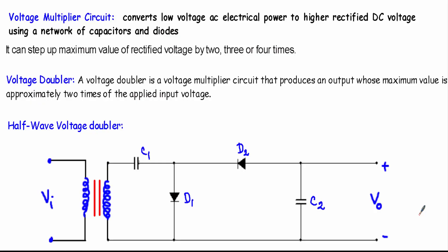In this video I will talk about voltage multiplier circuits, voltage doubler circuits, and the detail analysis of half-wave and full-wave voltage doubler circuits. Voltage multiplier circuits are electrical circuits that convert low voltage AC electrical power to higher rectified DC voltage using a network of capacitors and diodes. From the main supply line we will use a step-down transformer to convert high voltage AC into low voltage AC, and pass that through a network of capacitors and diodes.